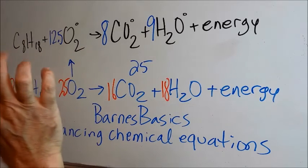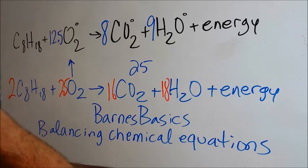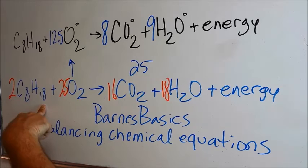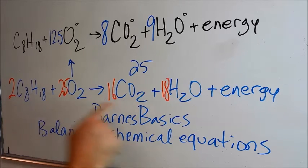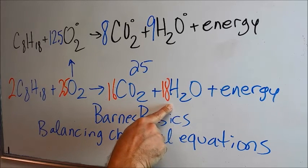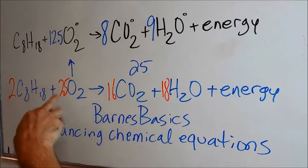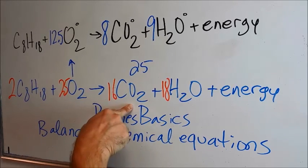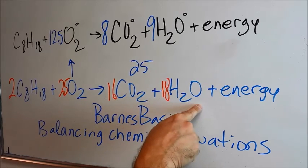Let's just reconcile it one last time. I see two times eight, I see 16 carbons. I see 16 carbons. I see two times 18, I see 36 hydrogens. I see 25. I see 25. I see 50 oxygens. 16 times 2 is 32, added to 18 is 50.